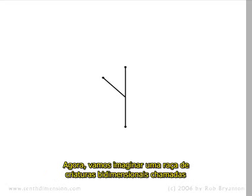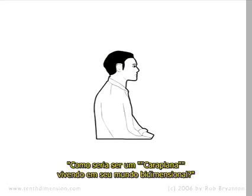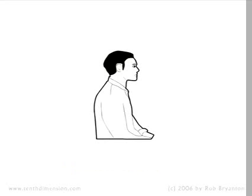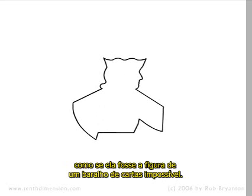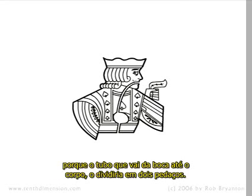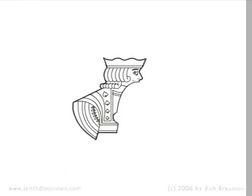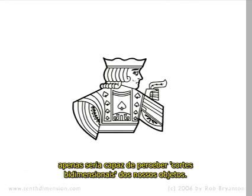Now let's imagine a race of two-dimensional creatures called flatlanders. What would it be like to be a flatlander living in their two-dimensional world? A two-dimensional creature would have only length and width, as if they were the royalty on an impossibly flat playing card. A flatlander couldn't possibly have a digestive tract, because the pipe from their mouth to their bottom would divide them into two pieces. And a flatlander, trying to view our three-dimensional world, would only be able to perceive shapes in two-dimensional cross sections.